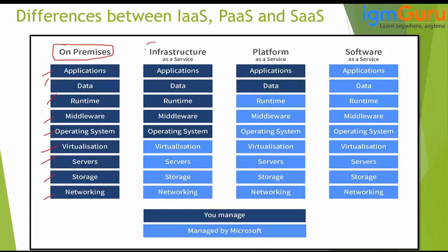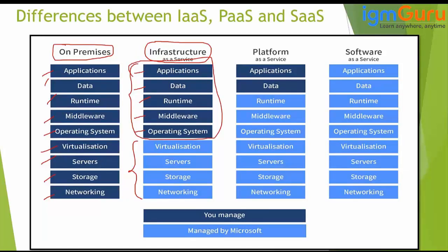Then we have Infrastructure as a Service. Here you can go to Azure, AWS, Google Cloud, or Rackspace and ask for VMs. You provide the configurations, and then depending on those configurations, you have to install the operating system, prerequisite software, .NET framework, runtime, your content management — Sitecore. These are the things you have to take care of in Infrastructure as a Service.